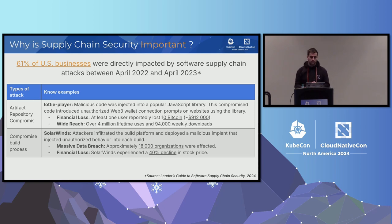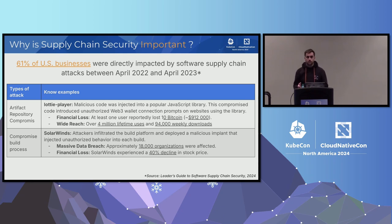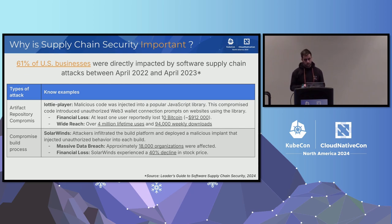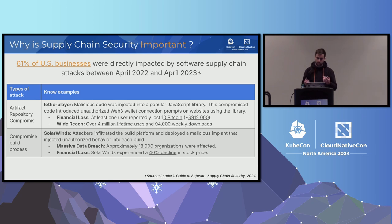Another example was the SolarWinds attack. It happened during the COVID period. In this case, it was a compromission of the build platform of the SolarWinds company, resulting in injection of malicious code inside their software. The impact was also massive in terms of data leaks and data breaches, with almost 20,000 organizations impacted including some U.S. agencies, and a financial loss for the company in terms of stock price. So supply chain security is important.